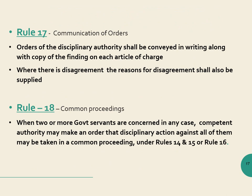Rule 17 specifies that whatever order is passed by the disciplinary authority, it has to be in writing and properly communicated. Orders of the disciplinary authority shall be conveyed in writing along with a copy of the findings on each article of charge. When there is a disagreement, the reasons for the disagreement shall also be supplied to the charged officer, because the charged officer should know what is going on against him.